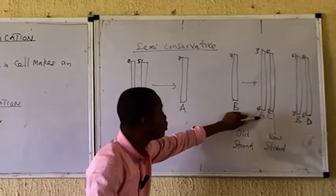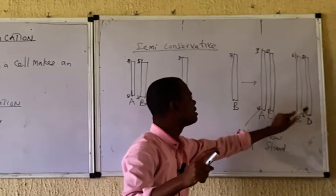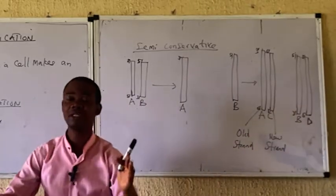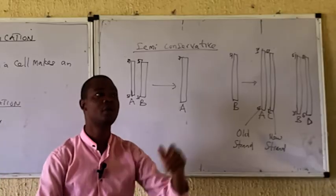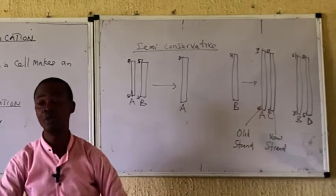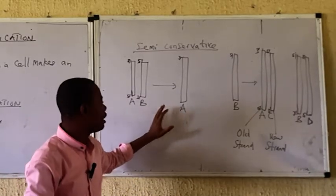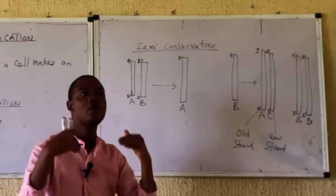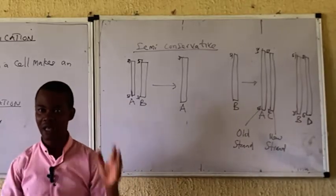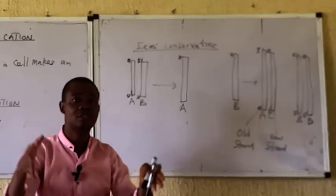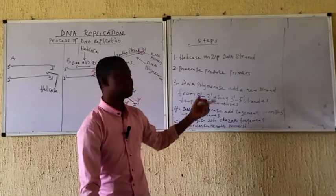We still have strand A, which is the old strand, and we now have C, which is the new strand. We still have B, which is the old strand, and we now have D, which is the new strand. The new strands produced are complementary to the old strand. If the old strand runs from 3' to 5', the new strand will be 5' to 3'. In the semi-conservative model, the old strand is preserved as a template, with both old strands being conserved.